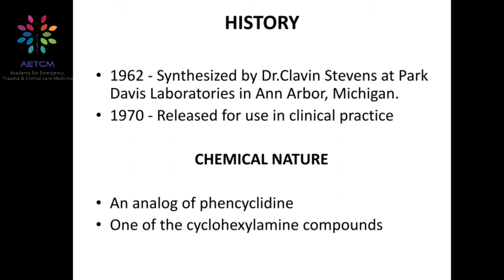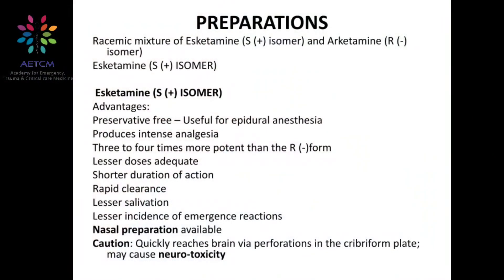What are all the forms of ketamine available? It has got two isomers: S-isomer and R-isomer. Initially this preparation was a racemic mixture of both isomers. Recently they are isolating the S-isomer separately, and this is being manufactured and marketed. It is available in parenteral injection form as well as nasal spray.